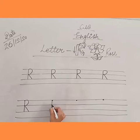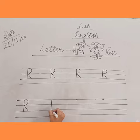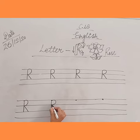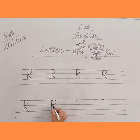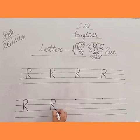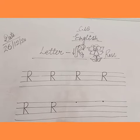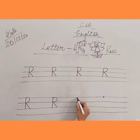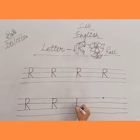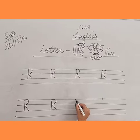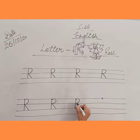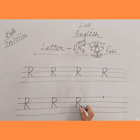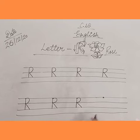Once again: start from the dot and make a standing line to the third line, then we will make a curve to the middle, and after this we will make a slanting line to the third line. Repeat: standing line to the third line, curve to the middle, slanting line to the third line.